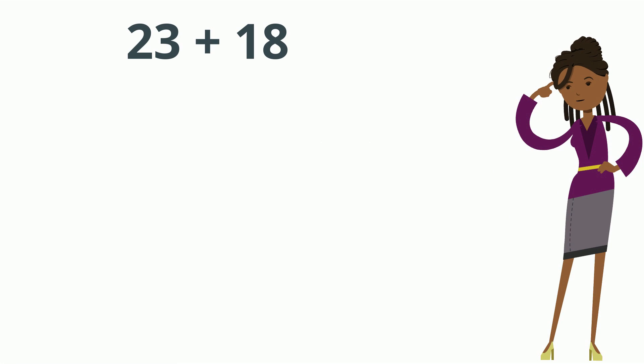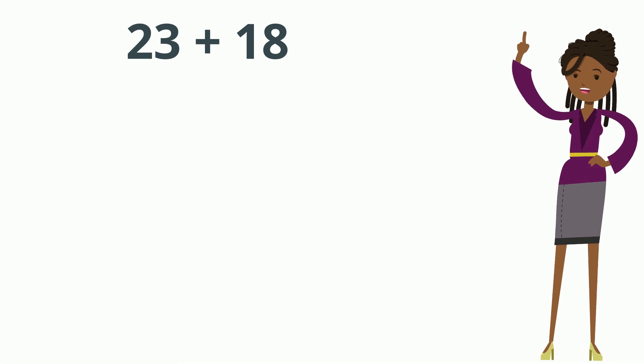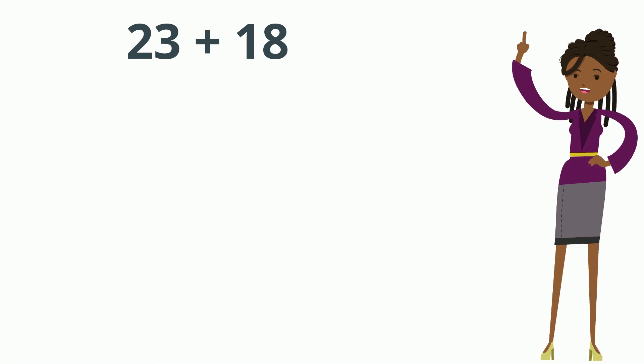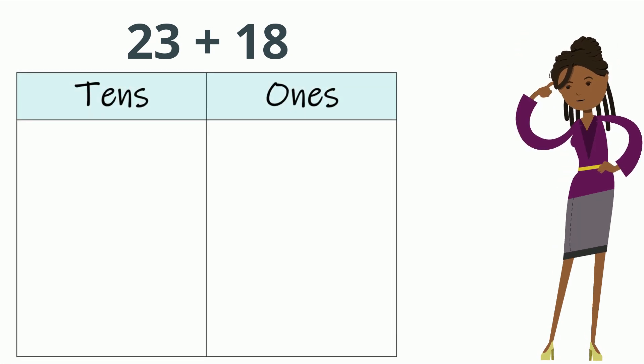The problem I see is 23 plus 18. I am going to think about both of these numbers and break them apart into 10s and 1s. I see that the number 23 has two 10s and three 1s. The number 18 has one 10 and 8 1s.